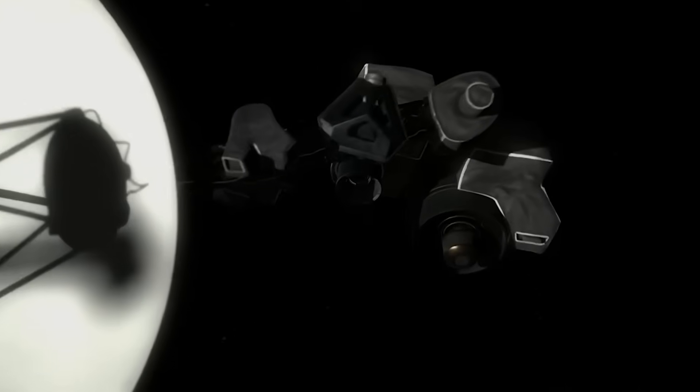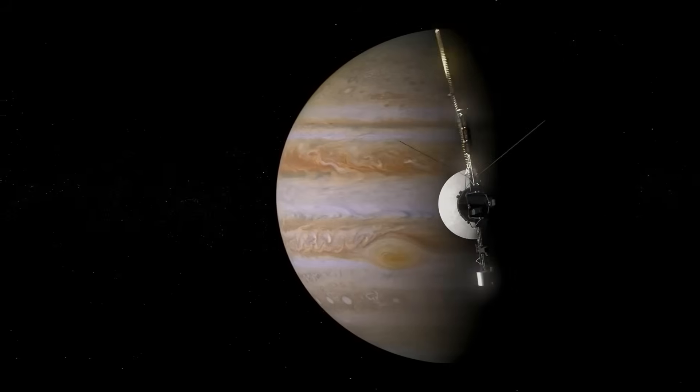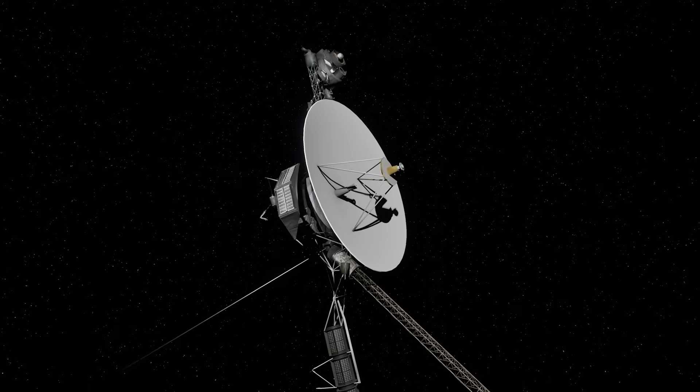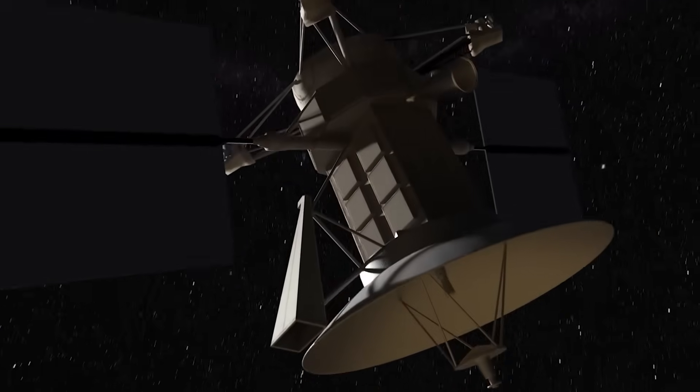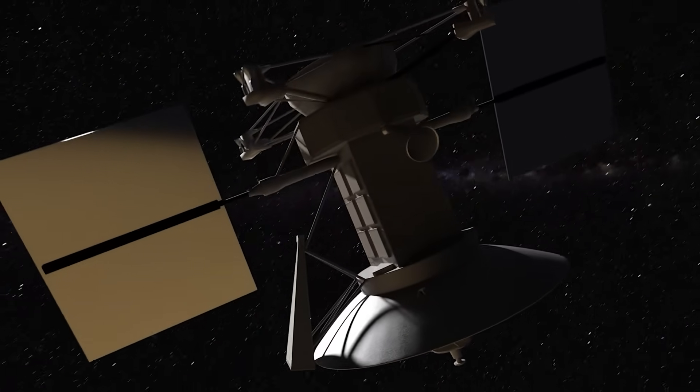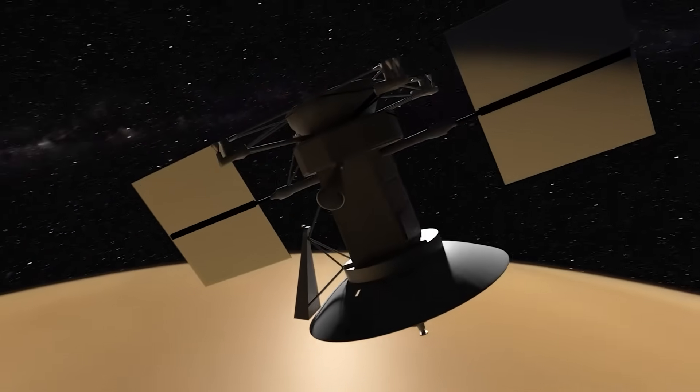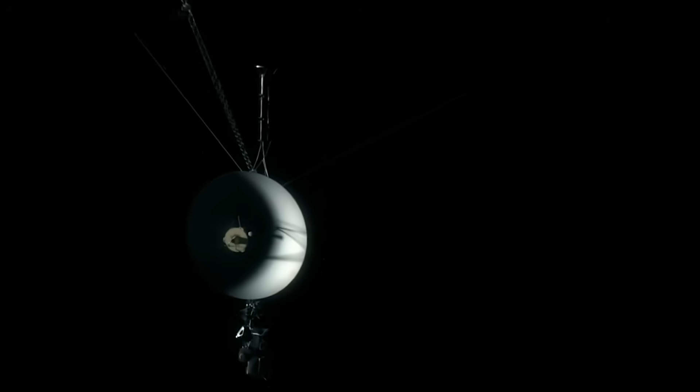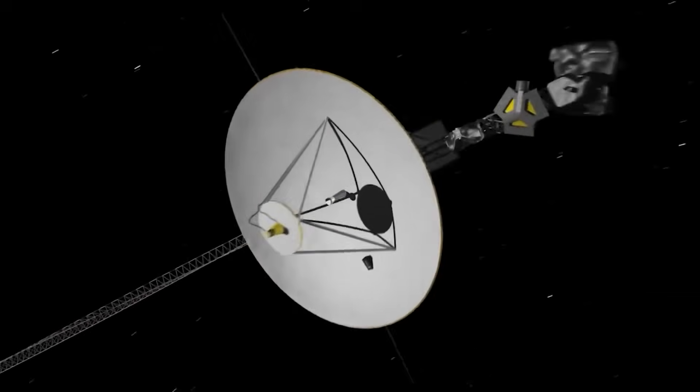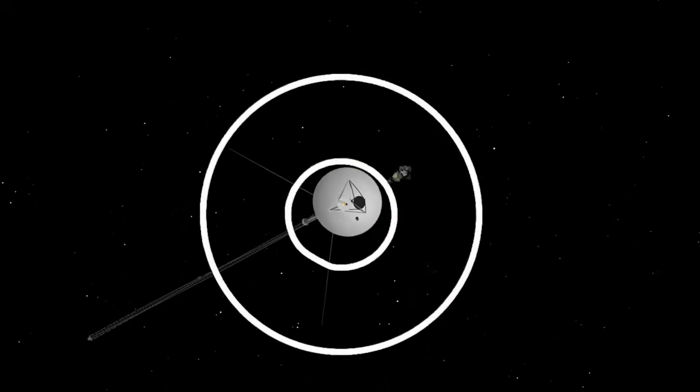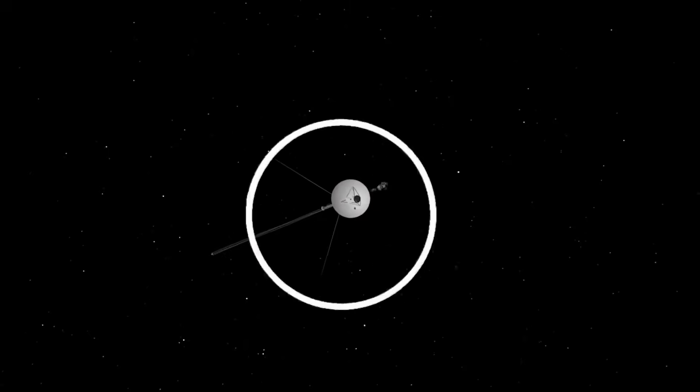While the discovery is groundbreaking, it comes at a time when Voyager 1's future is uncertain. The spacecraft, powered by decaying plutonium, is operating on borrowed time. Each year, its power diminishes, forcing engineers to make tough decisions about which systems to keep running. Despite these challenges, Voyager 1 continues to function in conditions far colder and harsher than it was designed for. Its resilience is a testament to the ingenuity of its creators and the determination of the NASA team managing the mission.